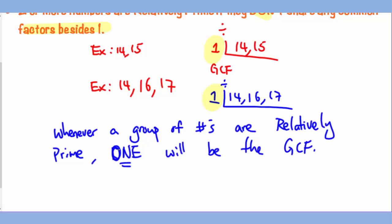One more time, 1 will be the GCF when a group of numbers are relatively prime. So that's why it pays to make sure you know that numbers are relatively prime or not. That's it for the lesson.